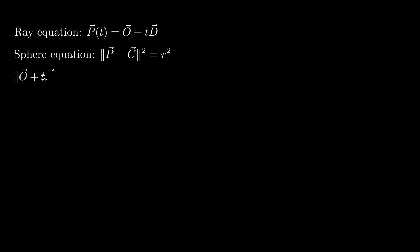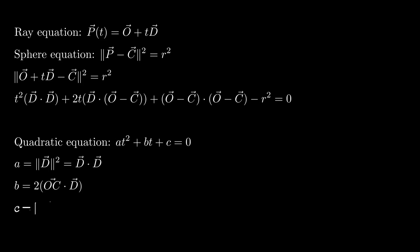If we plug the ray equation into the sphere equation and do some algebraic rearrangements, we end up with a quadratic equation. This equation gives us three important coefficients: A, which depends on the direction; B, which depends on both direction and the vector from the ray's origin to the sphere's center; and C, which depends on the distance between O and C and the sphere radius R.